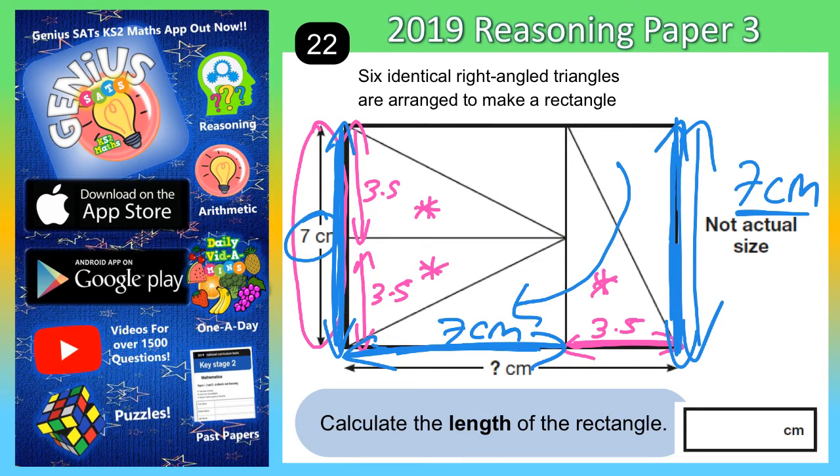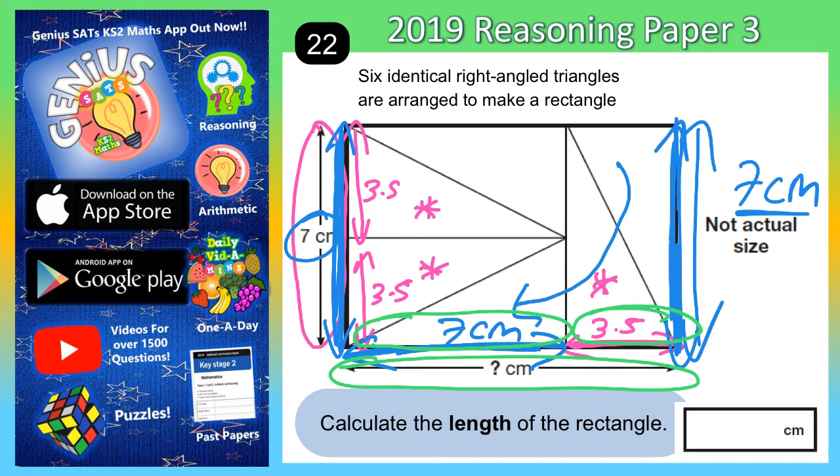And basically, now, we've got all we need to find the total distance of the question mark. Because we've got 7 plus 3.5. And the 7 plus the 3.5 together will be the total distance of the question mark. So, 7 plus 3.5.